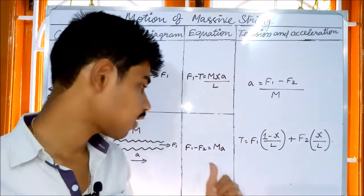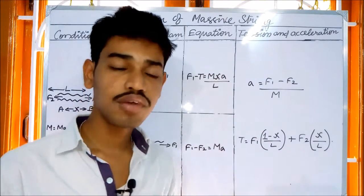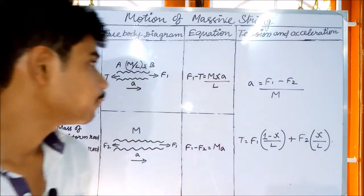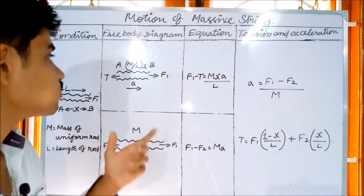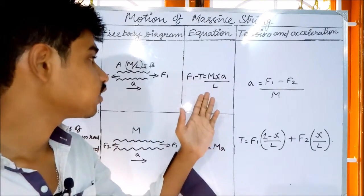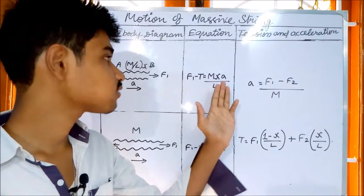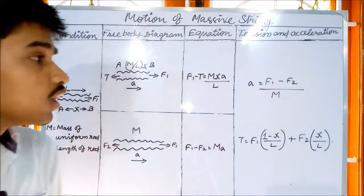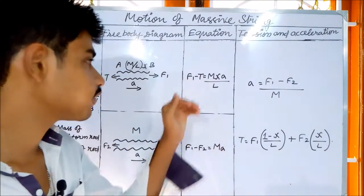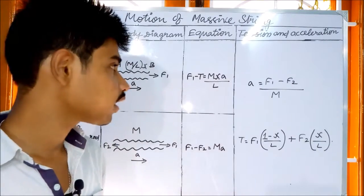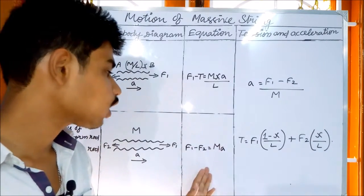Now, we have mass times acceleration. We have a tension. F1 minus T is equal to mx times A by L. Now, we have acceleration. Acceleration is going to be done in this form.